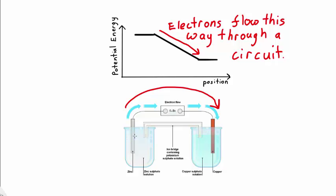As this occurs the rod of zinc will start to get smaller as it is turned into zinc ions and the copper rod will grow larger as copper ions are turned into copper metal.